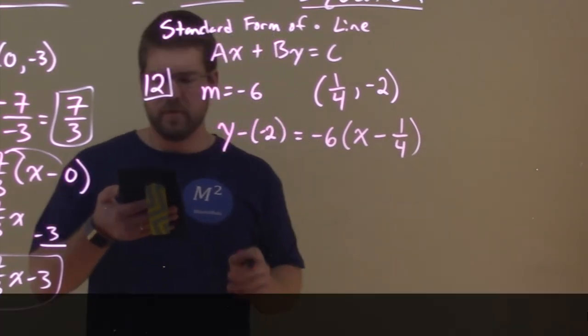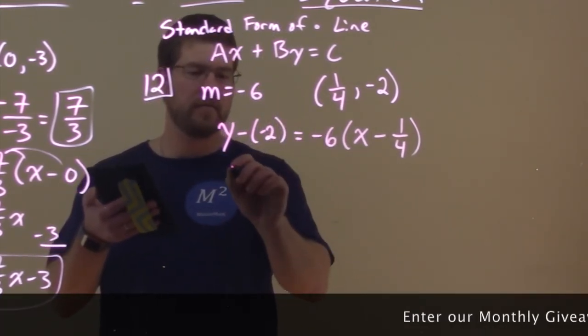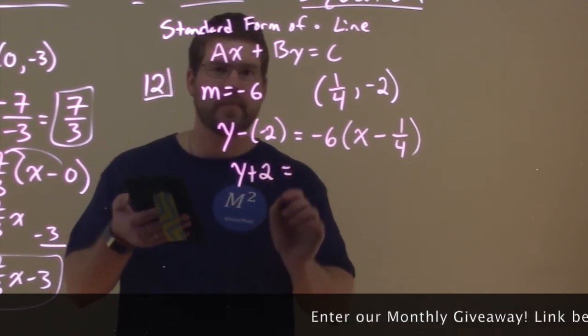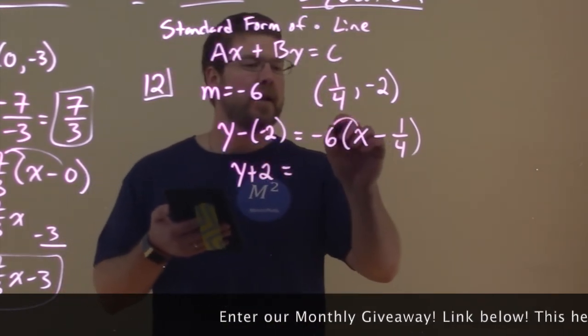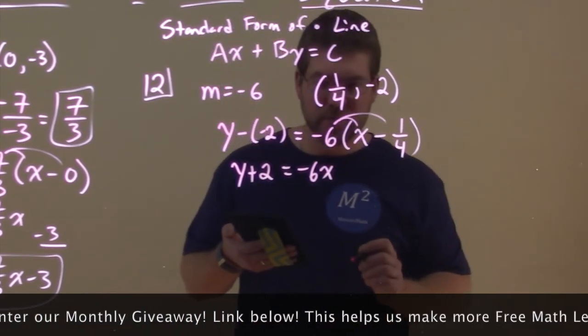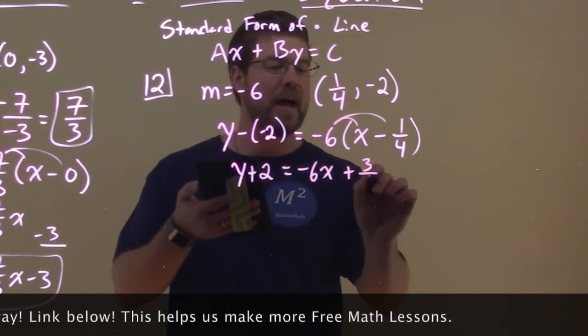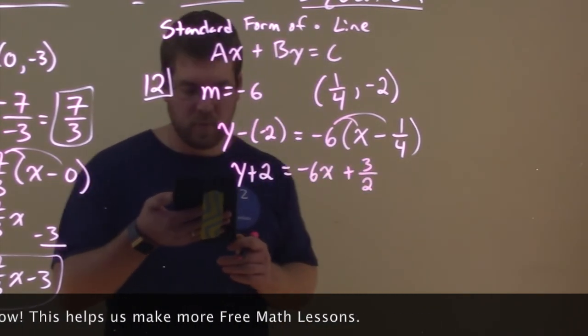So now what I'm going to do is simplify what I can. Minus a negative 2 is like plus a positive, so Y plus 2 here. Now distribute the minus 6 to both parts. Minus 6X, not too bad. Minus 6 times a minus 1/4 is a positive. And that comes out to be 3 halves when you simplify it.